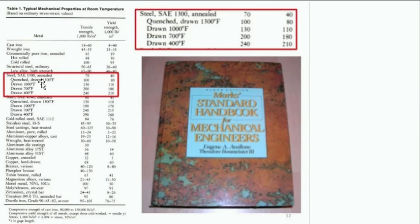Here we have highlighted the material properties for steel. You can see the yield strength is around 80,000 PSI, which is referred to as 80 KSI, and the tensile strength, when quenched and drawn, is around 100,000 PSI, or 100 KSI. The important one is the yield strength.